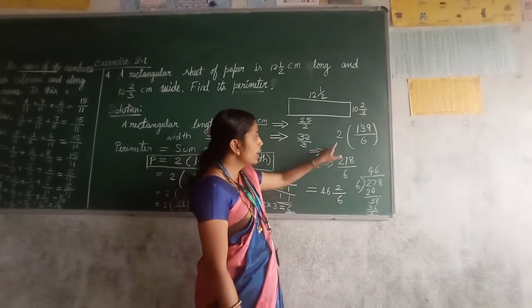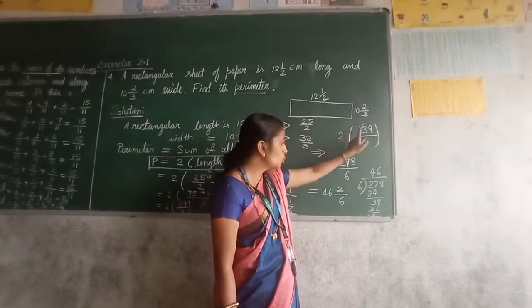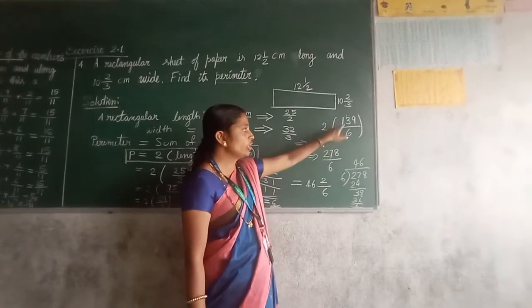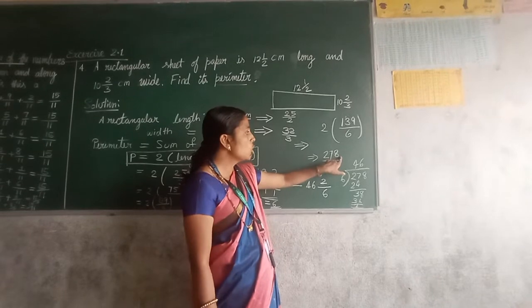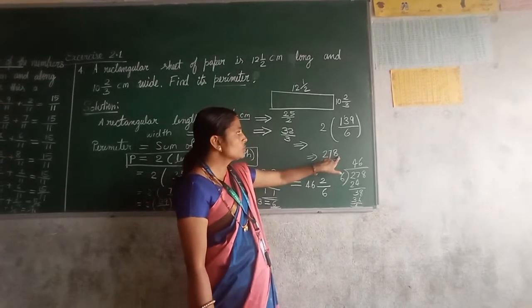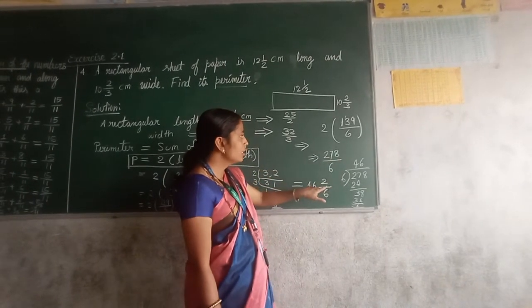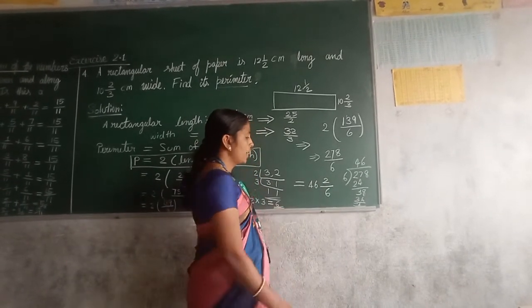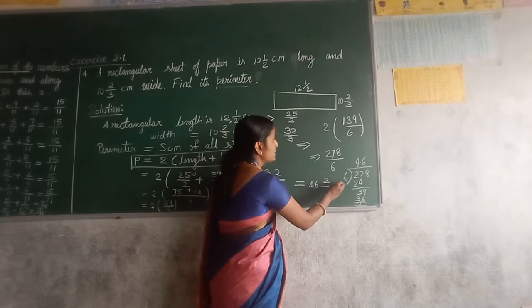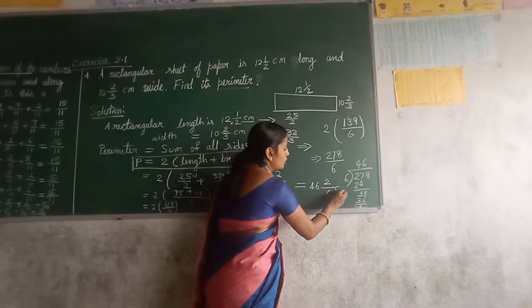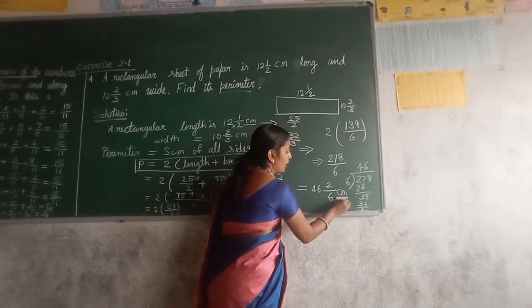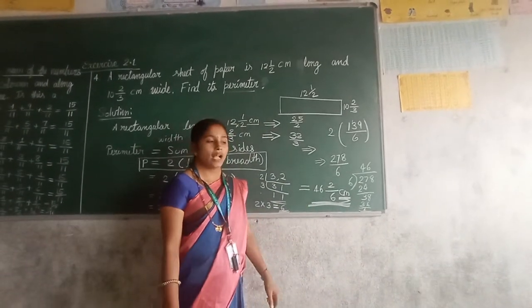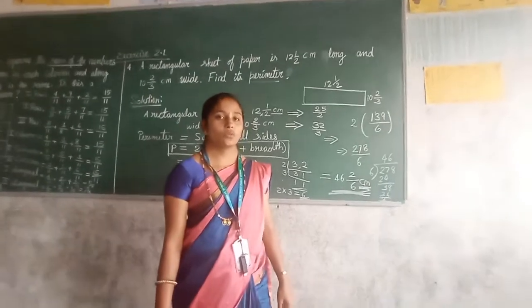Hope you understood. Instead of 139 you have got 278. 278, after that you are converting into mixed fraction. Then this is the perimeter. That is why you do not forget to write the centimeter. This is the clear answer. Hope you understood. Thank you my dear students.